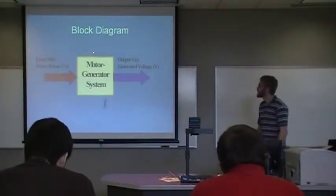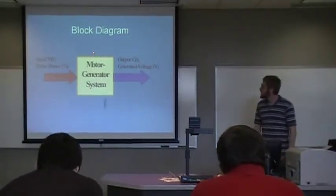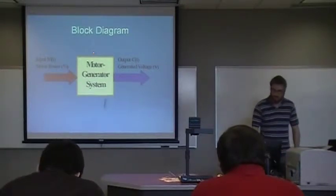Here's a simplified diagram. We have our input, our control variable. We input the motor speed, goes to the system, and we get a voltage.